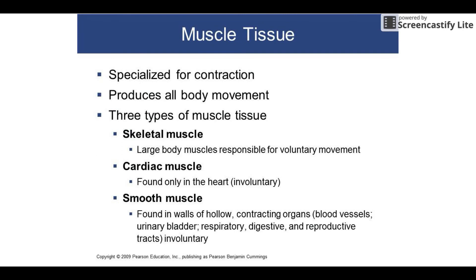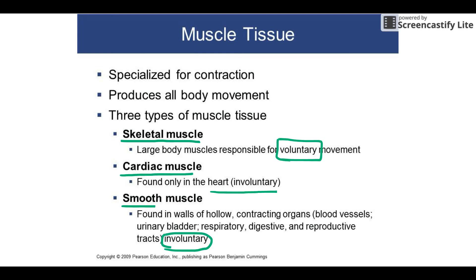The third major tissue category is muscle tissue, designed to contract and produce all body movement — both internal and external. This includes bending your elbow or walking, but also pumping blood, urinating, moving food through your digestive tract, and swallowing. There are three categories. Skeletal muscle controls voluntary movement — any muscle you can consciously contract, such as blinking or taking a deep breath. Cardiac muscle is involuntary and found only in the heart.